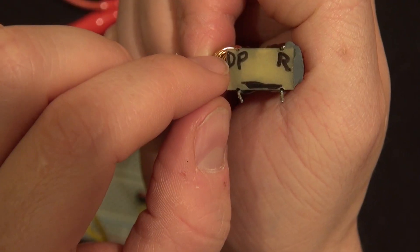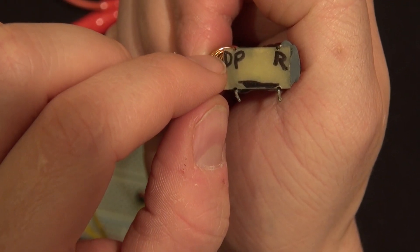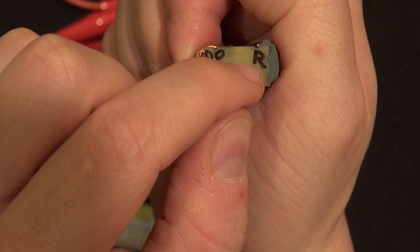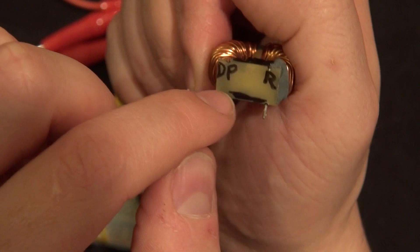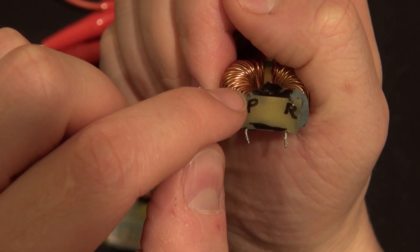Now as you can see, I've already marked this toroid core, showing that the DP stands for direct positive. The R means connects to the resistor. And those two lines means those two leads are connected together.